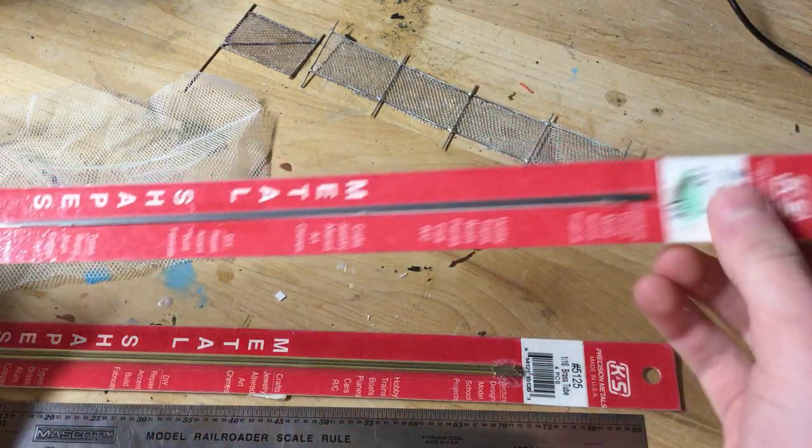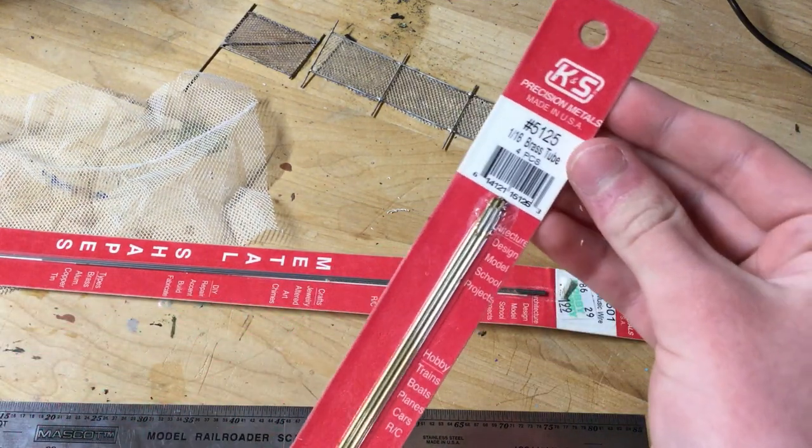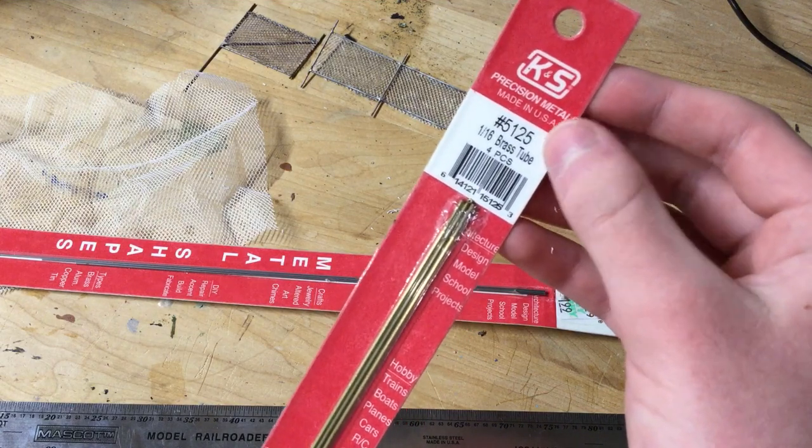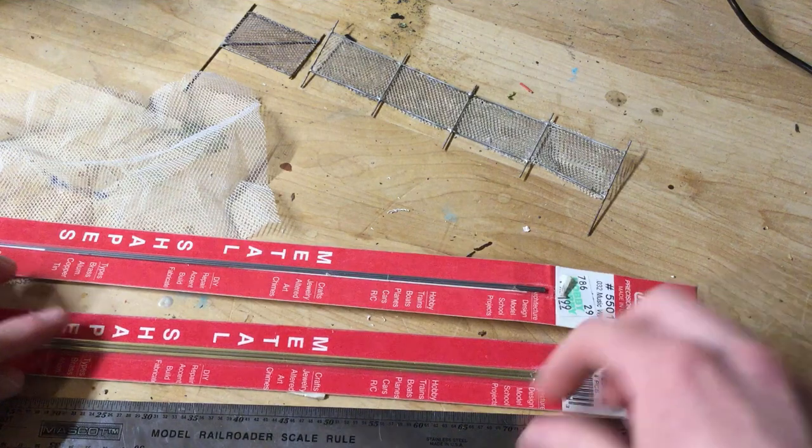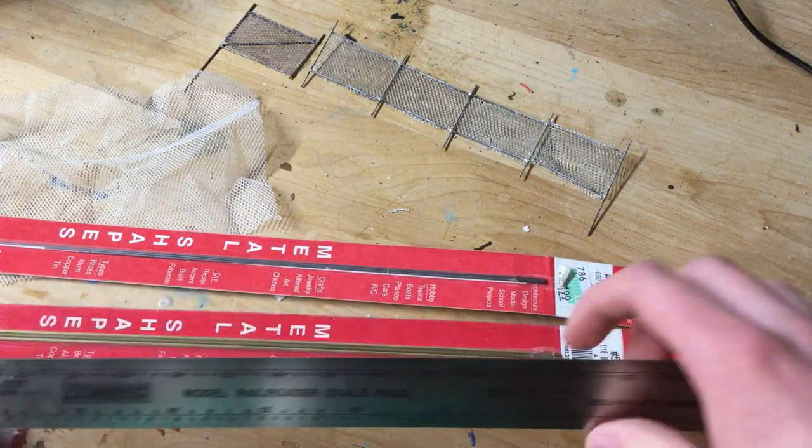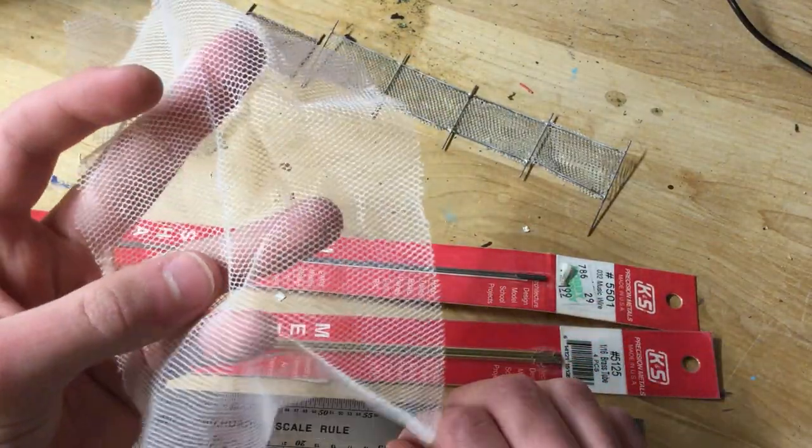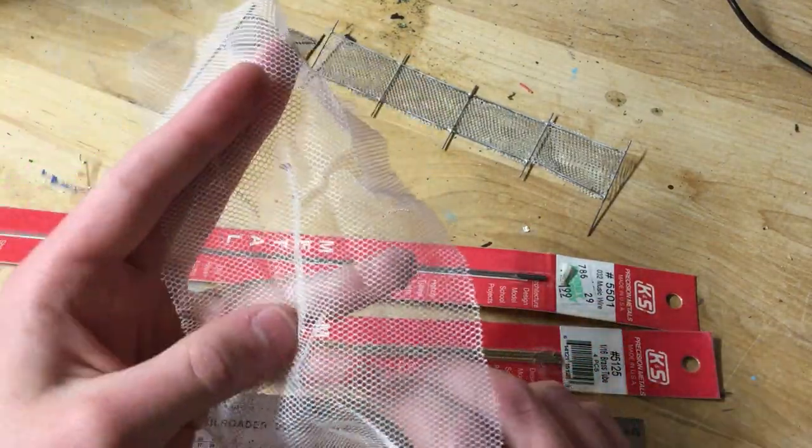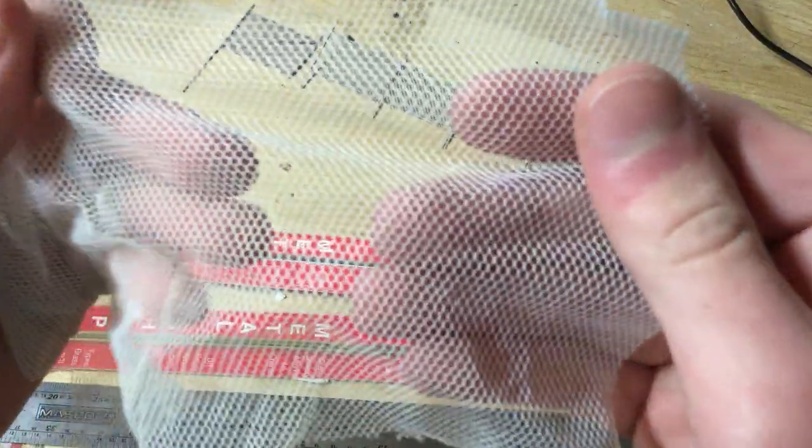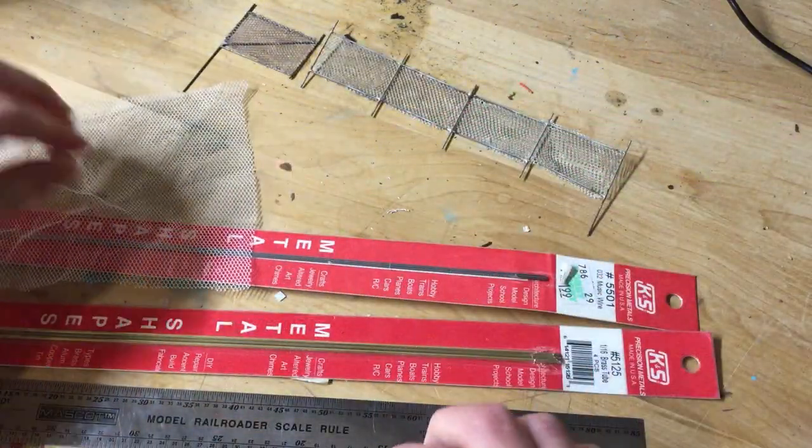That'll form your basic frame, and then for the gates, if you want them to be operating, you'll need K&S Precision Metals 1/16th brass tube. I also have my HO scale rule and my mesh material. This can be anything that you want that you think is scale size. This is just some plastic mesh - they're kind of hexagonal, but you can use almost anything for that.